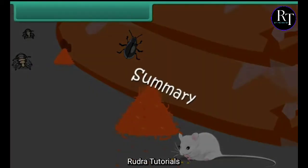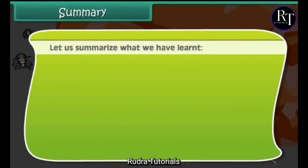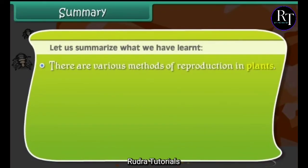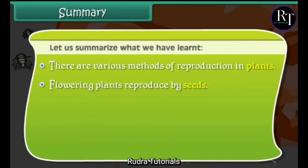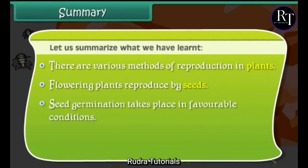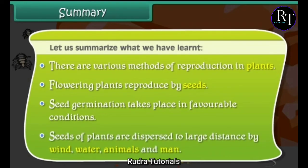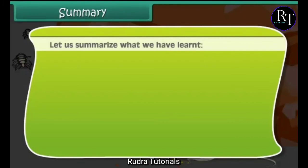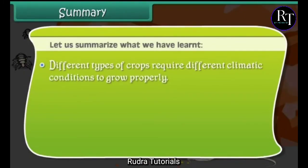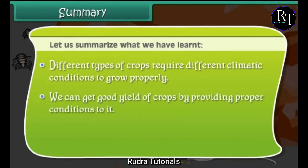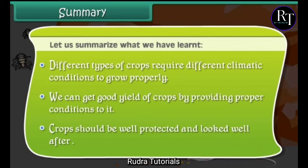Summary. There are various methods of reproduction in plants. Flowering plants reproduce by seeds. Seed germination takes place in favourable conditions. Seeds of plants are dispersed to large distances by wind, water, animals and man. Different types of crops require different climatic conditions to grow properly. We can get a good yield of crops by providing proper conditions, and crops should be well protected and looked after.